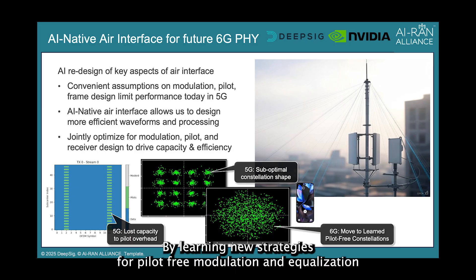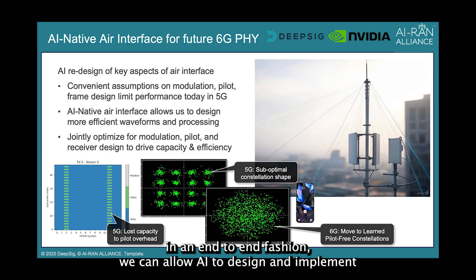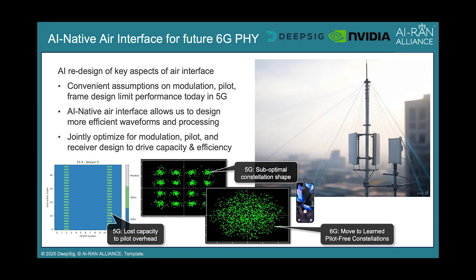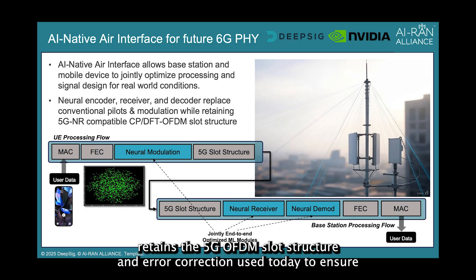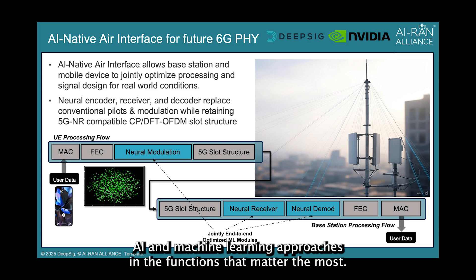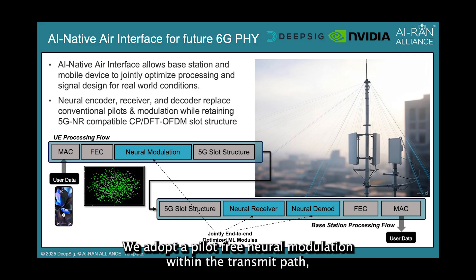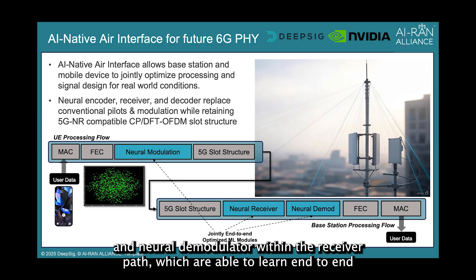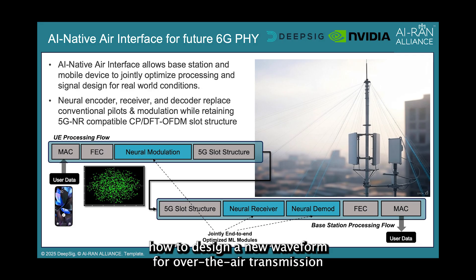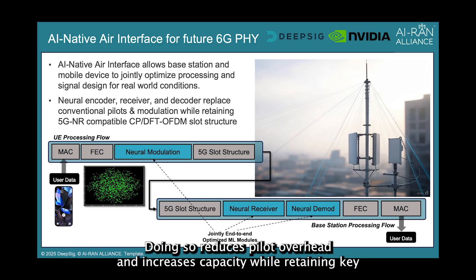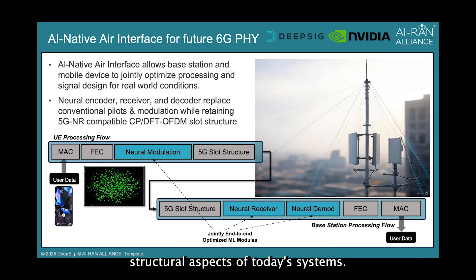By learning new strategies for pilot-free modulation and equalization in an end-to-end fashion, we can allow AI to design and implement communication systems which are far more performant than those used today. Our approach retains the 5G OFDM slot structure and error correction used today to ensure interoperability and ease of adoption, while leveraging AI and machine learning in the functions that matter most. We adopt a pilot-free neural modulation within the transmit path, as well as a neural receiver and neural demodulator within the receiver path, which learn end-to-end how to design a new waveform for over-the-air transmission on both CP OFDM and DFTS OFDM — also known as an autoencoder. Doing so reduces pilot overhead and increases capacity while retaining key structural aspects of today's systems.